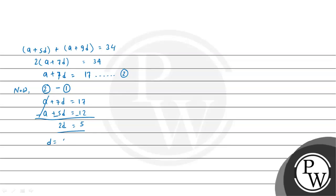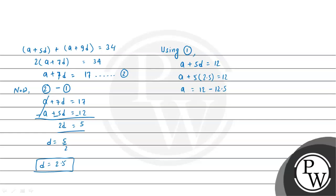Therefore D = 5/2, which we can write as D = 2.5. Substituting back into equation 1: A + 5 × 2.5 = 12, so A = 12 - 12.5. Hence, the first term A = -0.5 and the common difference D = 2.5.